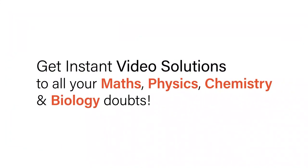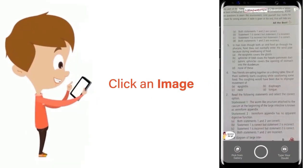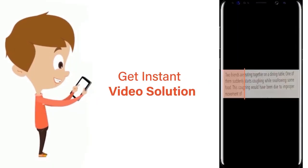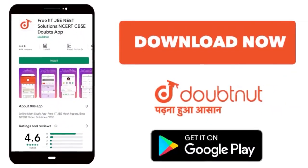With Doubtnet, get instant video solutions to all your maths, physics, chemistry and biology doubts. Just click the image of the question, crop the question, and get instant video solution. Download Doubtnet app today. Hello, the question says the three phase of the uterine cycle in order are: